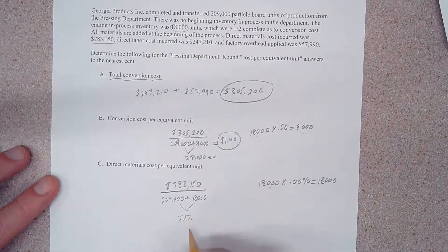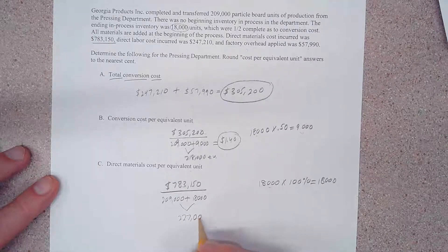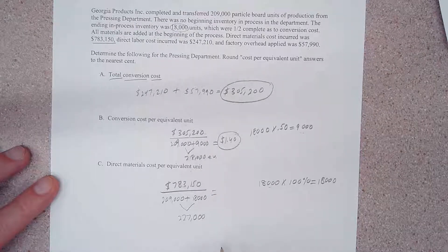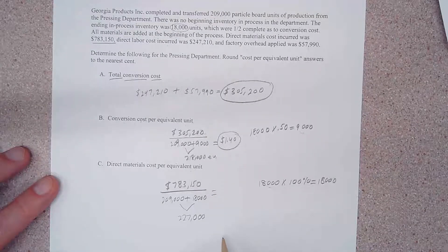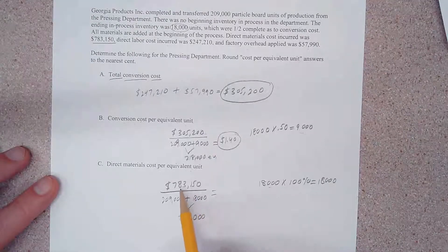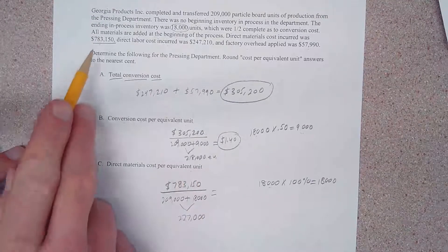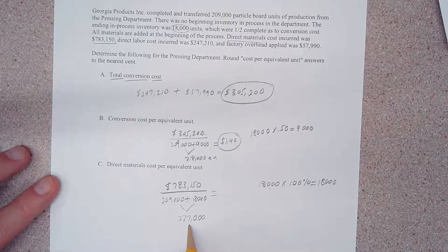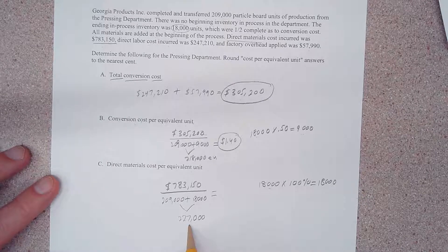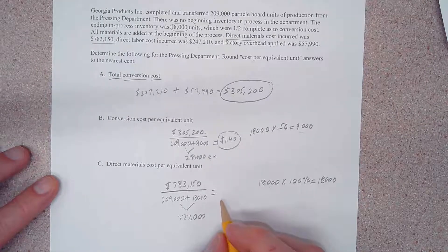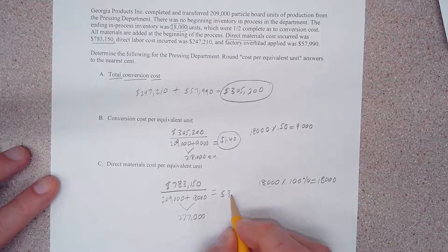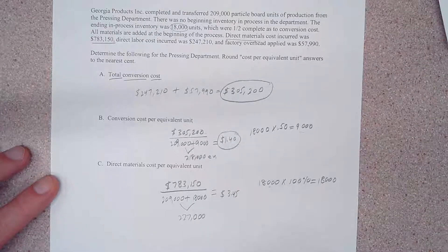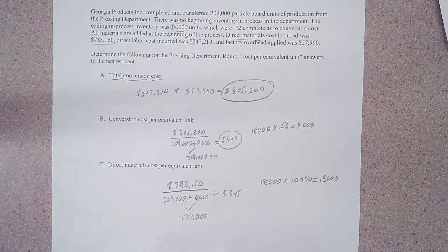So for materials our denominator is 227,000. So to come up with our direct materials cost per equivalent unit, we merely divide $783,150, that's our total materials cost, by 227,000 equivalent units. And if we do that we should come up with $3.45 direct materials cost per equivalent unit.